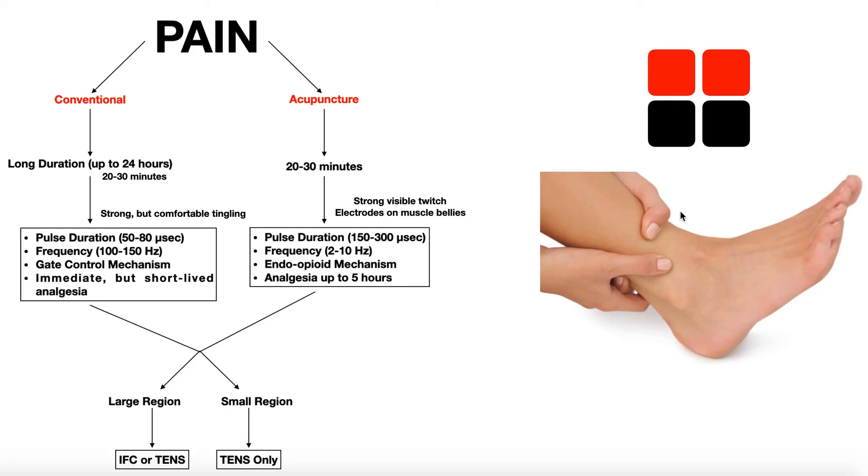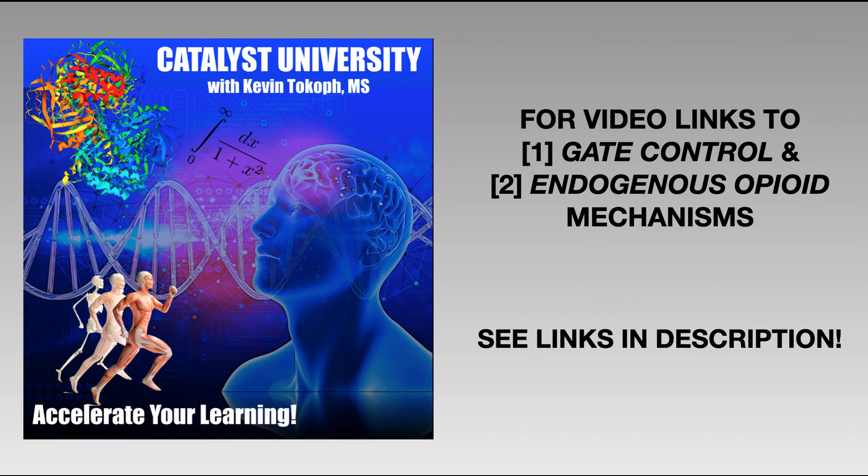The very last thing to talk about here is what mechanism conventional TENS and IFC uses, and what mechanism acupuncture TENS and IFC uses. Conventional TENS and IFC use something called a gate control mechanism. Acupuncture TENS and IFC use what's called the endogenous opioid mechanism.